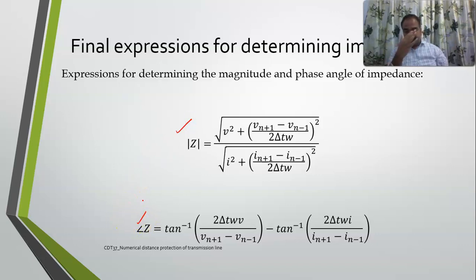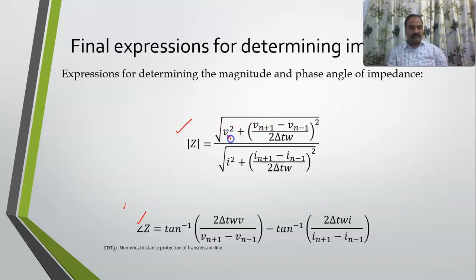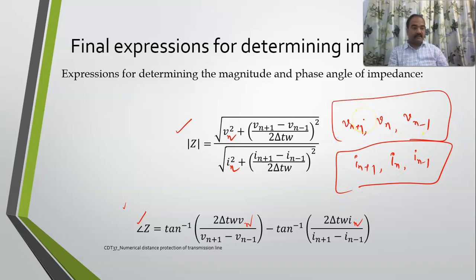This is the way we calculate v' and i', and based on that we can calculate |Z| and angle of Z. Once calculated, we compare with the setting value and then give a trip signal or not. How many samples are required? For the nth sample, you need vn, vn−1, and vn+1, and similarly in, in−1, and in+1 — so three current samples and three voltage samples simultaneously.